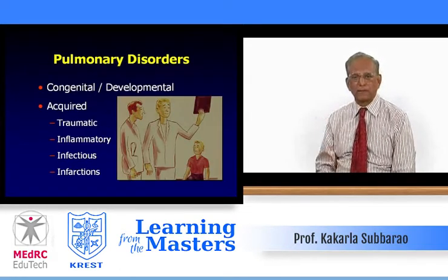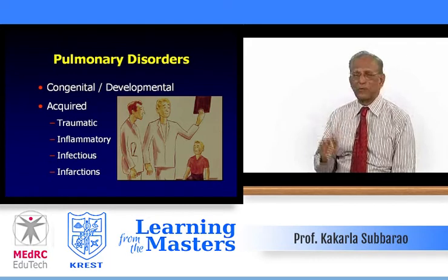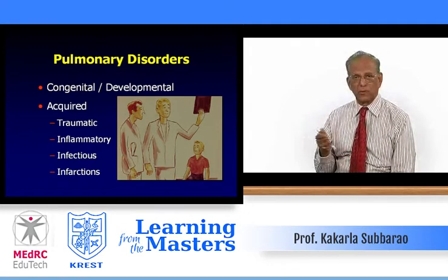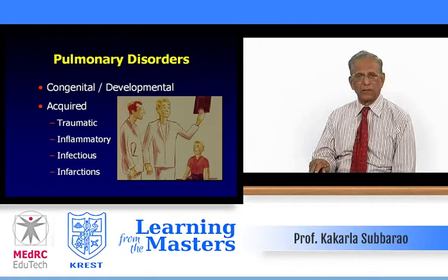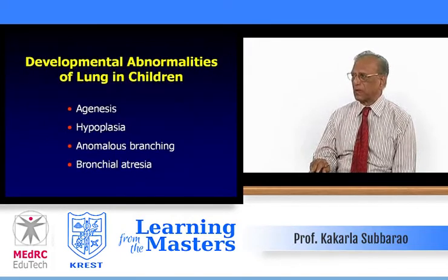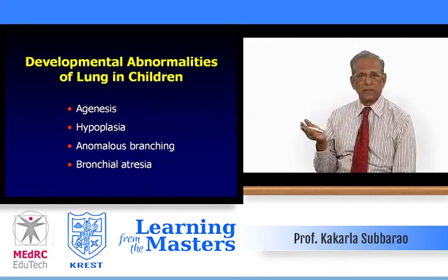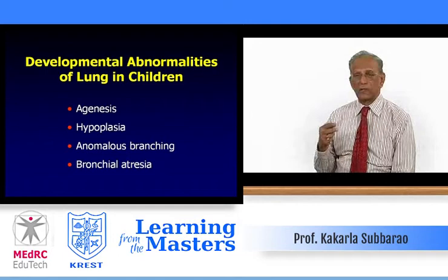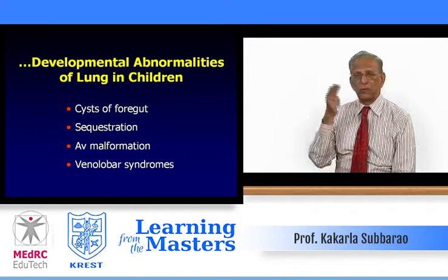Now we come to the lungs. When we say radiology of the chest, everybody focuses on lungs and pleura. Lung disorders can be categorized as congenital/developmental, acquired, traumatic, inflammatory/infectious, and infarctions. Developmental abnormalities of the lung in children include: agenesis, partial agenesis, hypoplasia of a segment, lobe, or entire lung, anomalous bronchial branching, bronchial atresia, foregut cysts, sequestration, AV malformation, and venolobar syndromes.